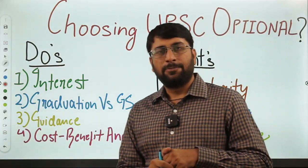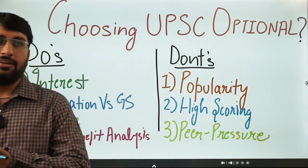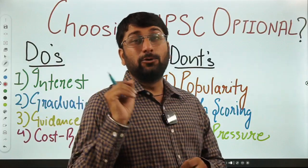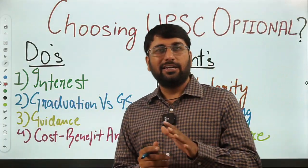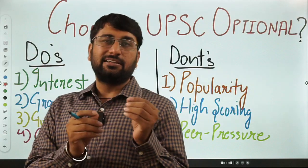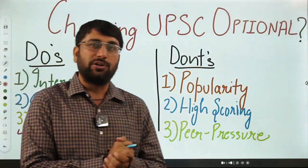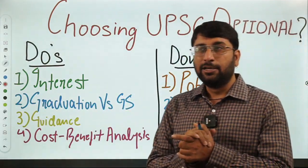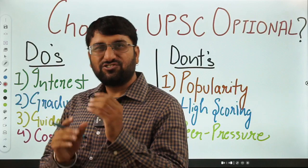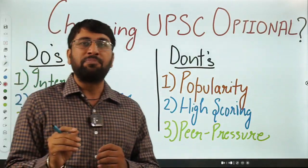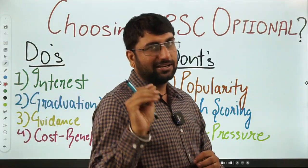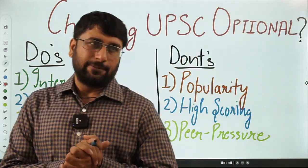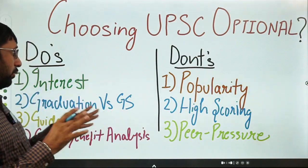In this video, we will talk about a very important question - what are the factors that you should be considering while choosing your UPSC optional. UPSC ka jo weightage hai, that is 500 marks - 250 marks each for your two optional papers - it can either make you or break you in the final results. So it is very important that you strategize carefully and select your UPSC optional wisely.